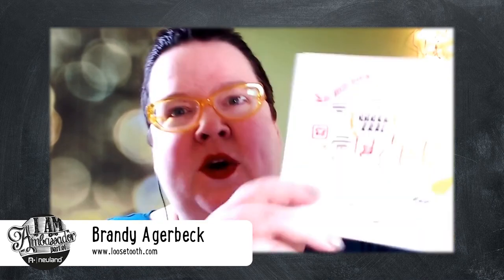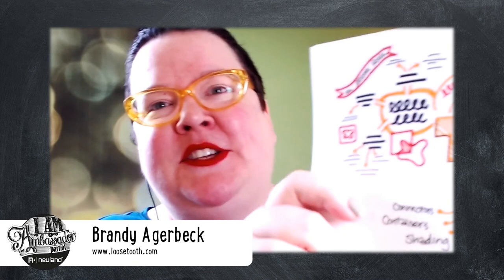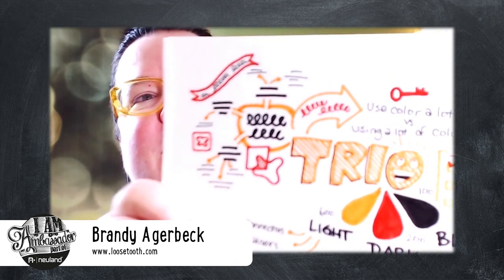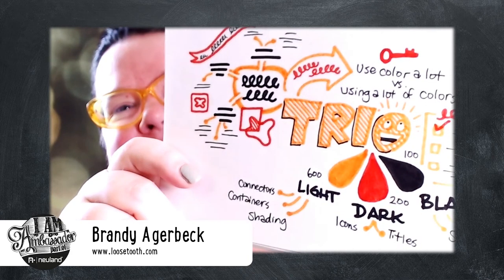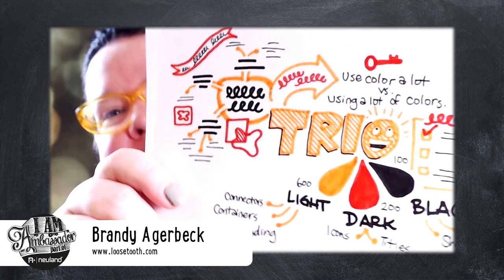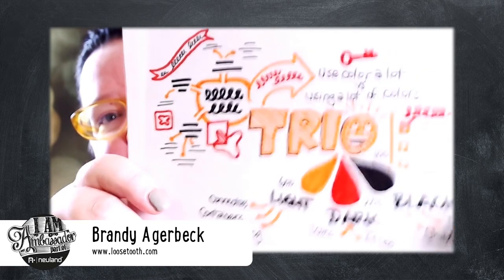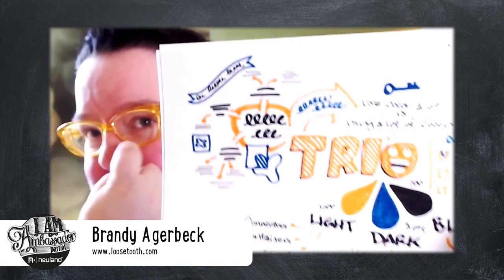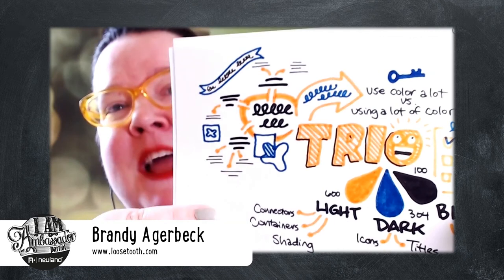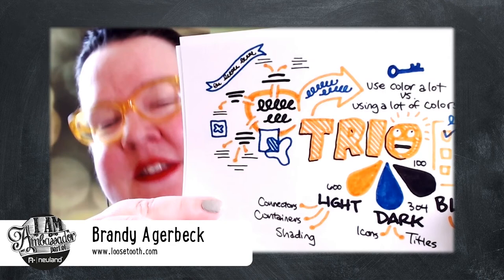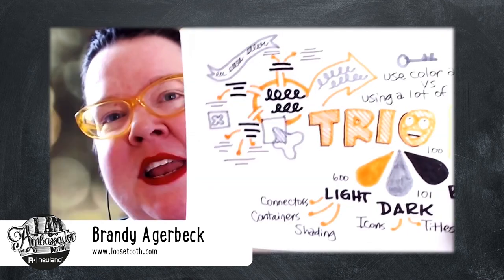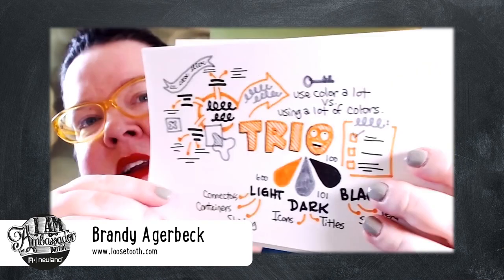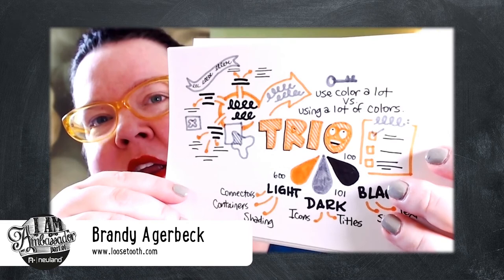I can show some physical examples. This is another version of the drawing — in Neuland colors, this is 100 black, 200 red, and 600 orange. Here's an example with 600 orange, and 304, the nice dark denim blue. And here you can see 600 orange, 101 gray, and black. You use the gray differently — I often use gray similarly to yellow. Here's the yellow and the gray — 500 yellow and 101 gray — it's a nice combination. Even though yellow and gray are not heavy colors, it works really well.